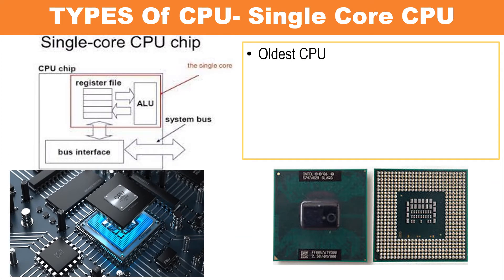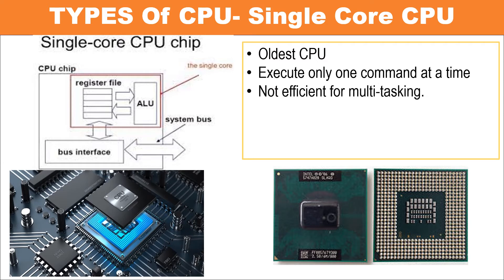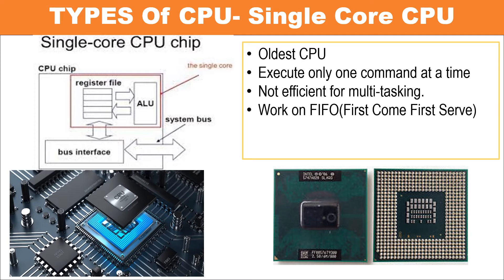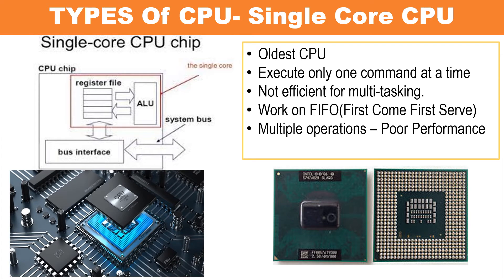The single core CPU is the oldest CPU, which was mostly used in traditional personal and office computers in older days. The single core CPU can execute only one command at a time, and it is not sufficient for multitasking. The single core CPU works on FIFO, that means first come first serve basis — if one operation is started, the second process should wait until the first one is finished.